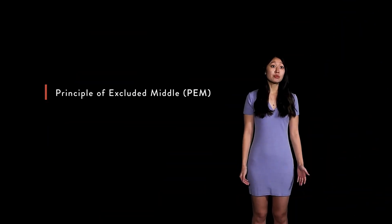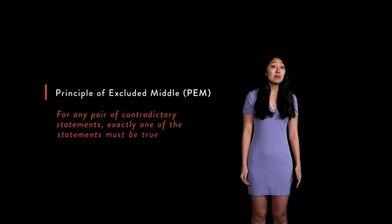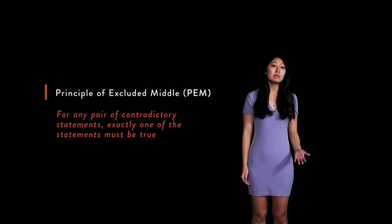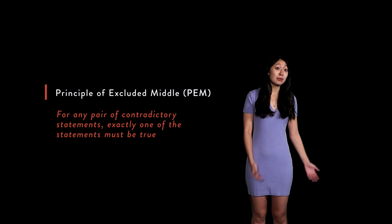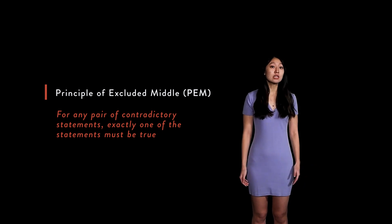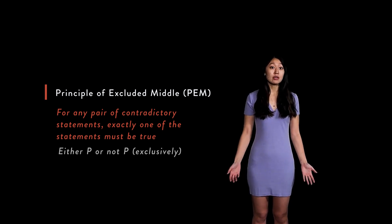This basic logical principle expresses a fairly intuitive fact. For any pair of contradictory statements, one must be true. For any proposition P and its contradictory not-P, the formal statement of PEM is: either P or not-P, exclusively.